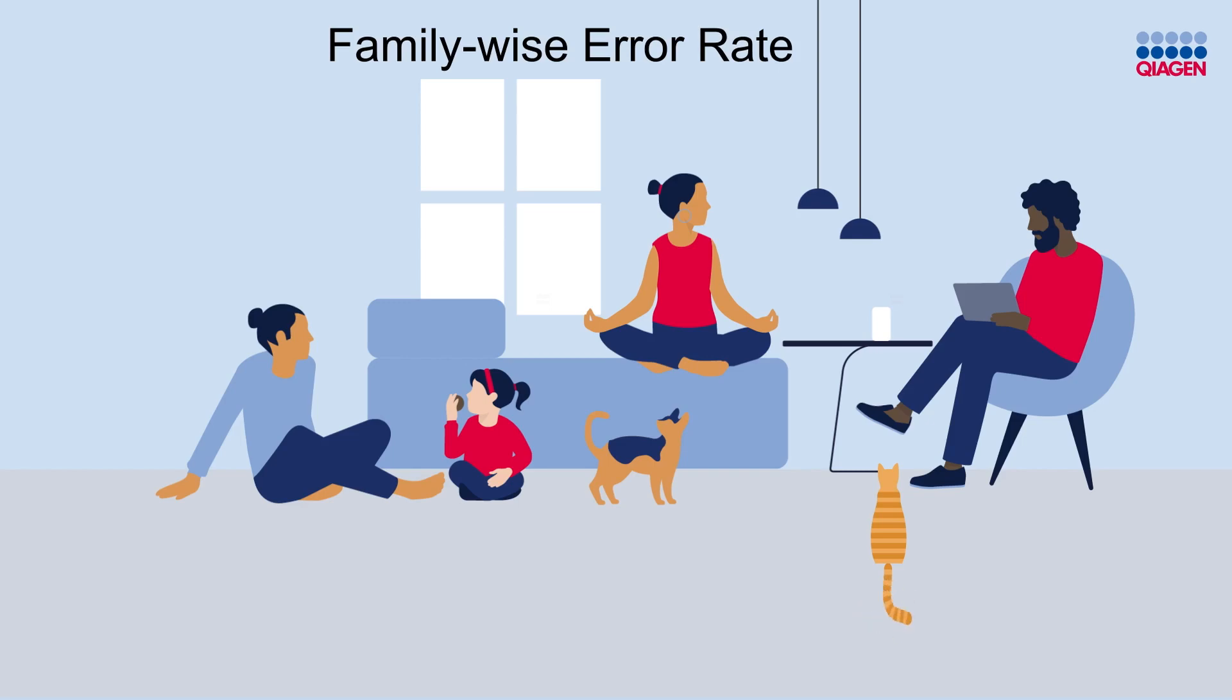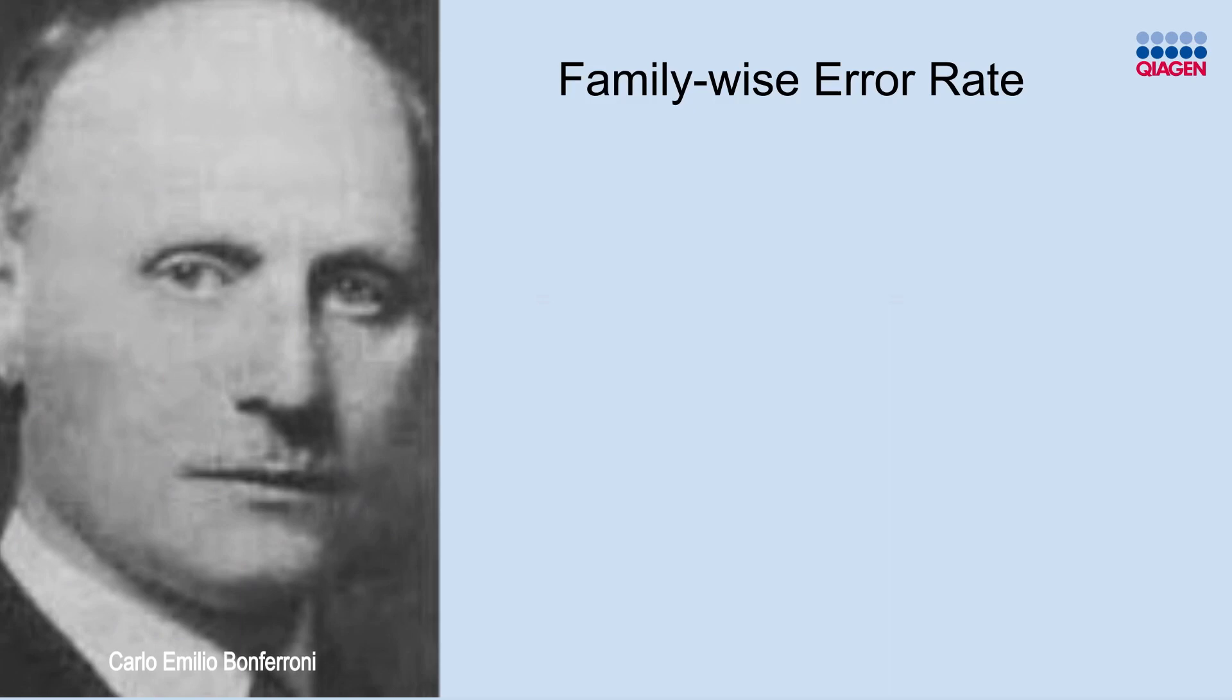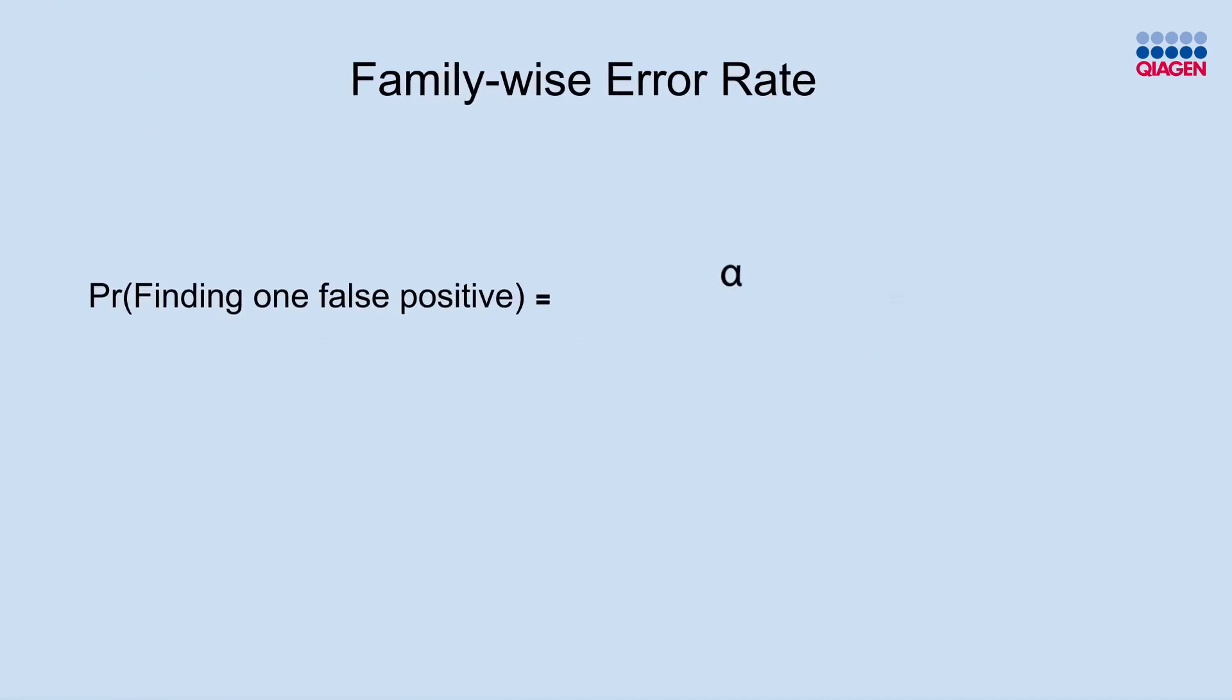The most popular method that's used to control the family-wise error rate is named after its creator, Carlo Emilio Bonferroni. The Bonferroni correction method seeks to control the family-wise error rate. The family-wise error rate is the probability that you would find even one false positive, no matter how many hypotheses you test. This is an appropriate test to use when you want to limit the probability that any of your tests results in a false positive. This correction method adjusts the alpha for all tests. The calculation is simple. You choose an alpha before running your tests, and divide it by the number of hypotheses you are testing.